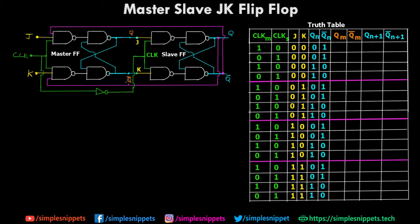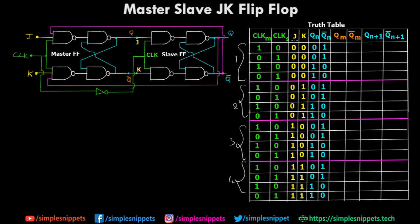qm and q bar m are the intermediate outputs coming from the master flip-flop, needed to calculate the next state, because they provide the input to the slave flip-flop which is used to calculate q(n+1) and q bar(n+1). Now why are there 16 different combinations? Basically there are four different cases corresponding to the varying inputs: JK as 00 for the first four cases, then 01, then 10, and then 11.